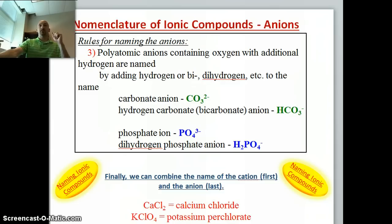The last step in naming ionic compounds is just combining the name of the cation with the name of the anion and you can form the name. Here we get calcium plus chloride. We get calcium chloride.